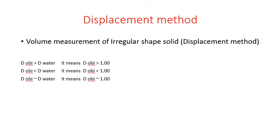In this video I'm going to talk about the displacement method, or volume measurement of irregular shape solids. This method is used when we have an irregular shape solid. We have a graduated cylinder, we add water, and we drop our irregular shape solid into it. When the water level changes, we find the difference between the initial and final volume to report the volume of the irregular shape solid.